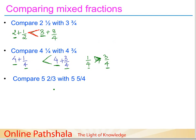In the third case, we have five and two thirds versus five and five by four. Again the whole part is five for both, so we cannot make a decision based on the whole. We set the whole aside and have to compare just the fractional parts of the mixed fractions.